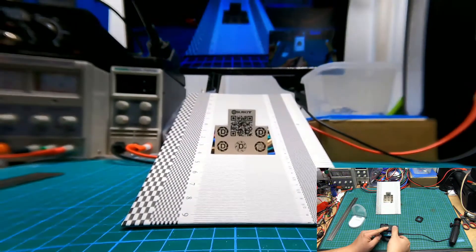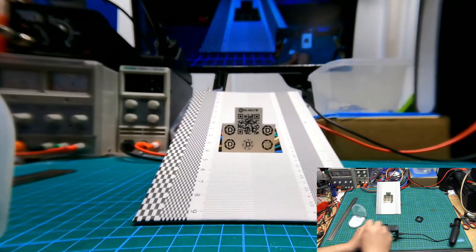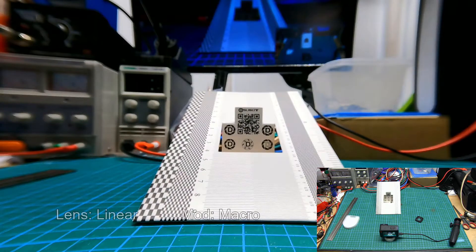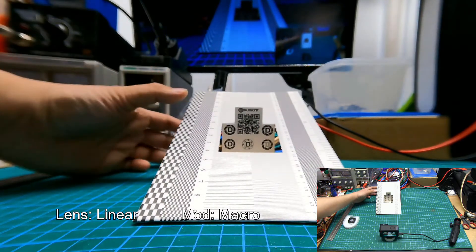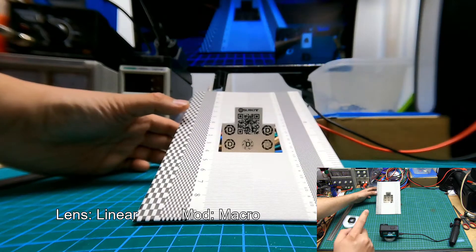Yeah, it takes a little bit of force to get that locked into place. Either way, here we go, this is the macro lens attachment on wide, no, linear.